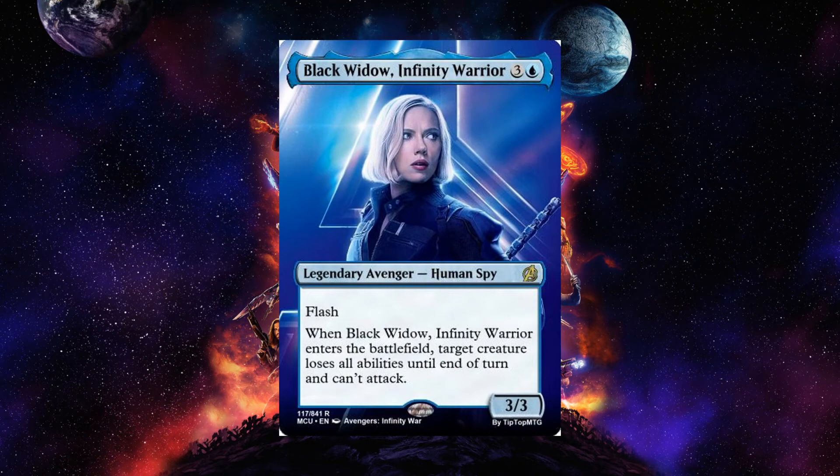Black Widow Infinity Warrior is a four-cost blue legendary Avenger human spy 3-3 with flash. When she enters the battlefield, target creature loses all abilities until end of turn and can't attack. You can kind of just say to Thanos — you lose all abilities. Very simple but very powerful.